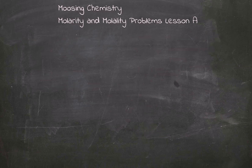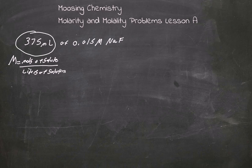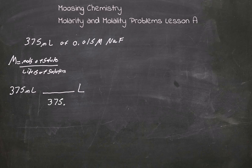Now we have 375 milliliters of 0.015 molarity NaF, and we want to solve that problem. Molarity equals moles of solute over liters of solution, but we have milliliters, so we must convert. Moving the decimal three spaces gives us 0.375 liters.